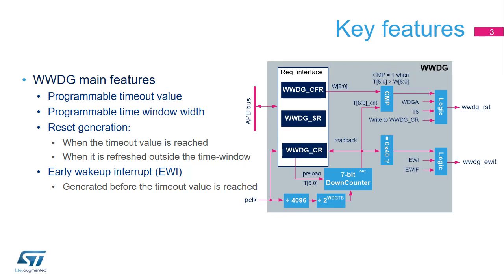The Window Watchdog offers several features. The user can program the timeout value and the window width according to application needs. It can generate a reset under two conditions: when the down-counter value becomes less than or equal to 0x3F, or when the watchdog is refreshed outside the time window. It can also generate an early wake-up interrupt when the down-counter reaches 0x40, which can be used to reload the down-counter to avoid a reset or to manage system recovery and context backup operations.